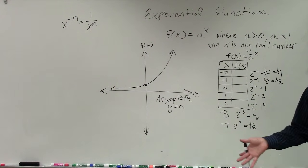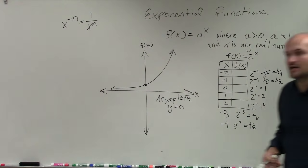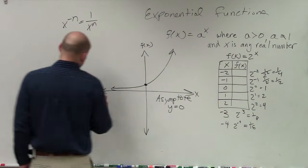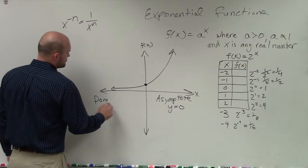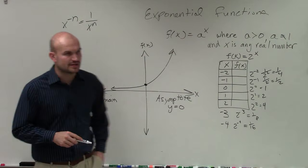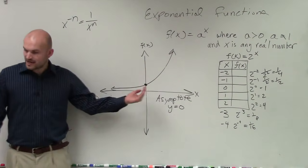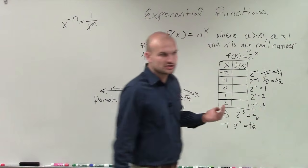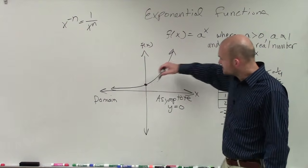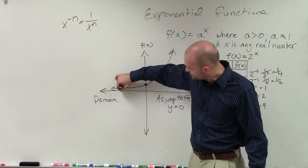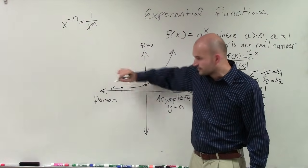And now that we have an asymptote, we can also start talking about domain and range. So if I look at the domain of an exponential function, remember, the domain is going to be the set of all x values that are going to make your function true. So what that means is if I choose an x value here, is there a point on the graph? Yes.